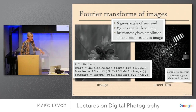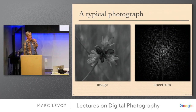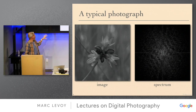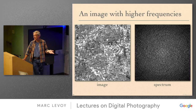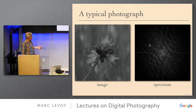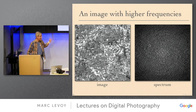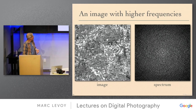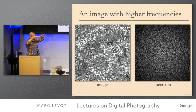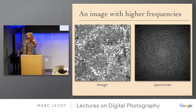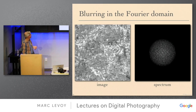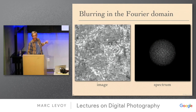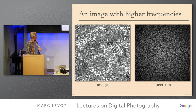It's fun to look at Fourier transforms of images. Let's build intuition: a flower image has some high frequencies and some low frequencies. Looking at a Where's Waldo image — it has a lot more high frequencies, and that's literally true in the spectrum. There's more stuff around the periphery. The middle is the zero-frequency DC term giving the average intensity of the image.